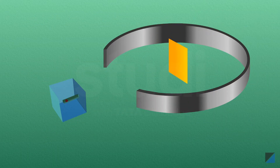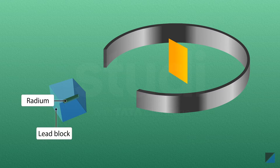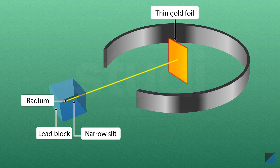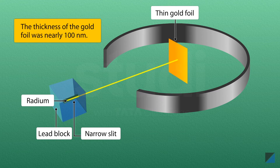The experimental setup consisted of a piece of radium, which is a radioactive metal, placed in a lead block. The lead block had a slit to allow only a narrow beam of alpha particles emitted by the radioactive radium to pass through. The alpha particles escaping from the narrow slit were directed to a thin gold foil of a thickness of approximately 100 nanometers.